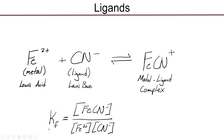In terms of the equilibrium constant for this reaction, just as we use Ksp to describe ionic compounds breaking down in water, or Ka and Kb to describe acid-base strengths, we describe the strength of the interaction between the Lewis acid and the Lewis base with a special equilibrium constant called K sub F, or an equilibrium formation constant. The expression looks like any other equilibrium constant: the concentration of the product, the iron-cyanide complex ion, divided by the concentration of the iron and the concentration of the cyanide.